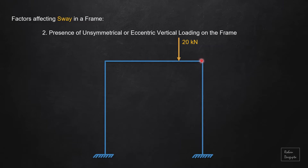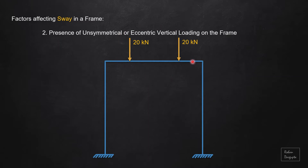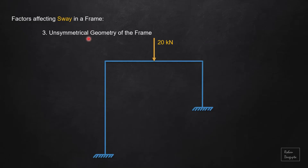Secondly, the presence of unsymmetrical or eccentric vertical loading will also cause a frame to sway. For example, this load is not acting at the mid span — it is acting at some distance from the right hand side. But if an equal load is acting equally from the left hand side, it becomes symmetric vertical loading and the frame will not sway — it becomes a non-sway frame. But if there is a random UDL acting over some span, this becomes unsymmetrical vertical loading and the frame will be a sway frame.